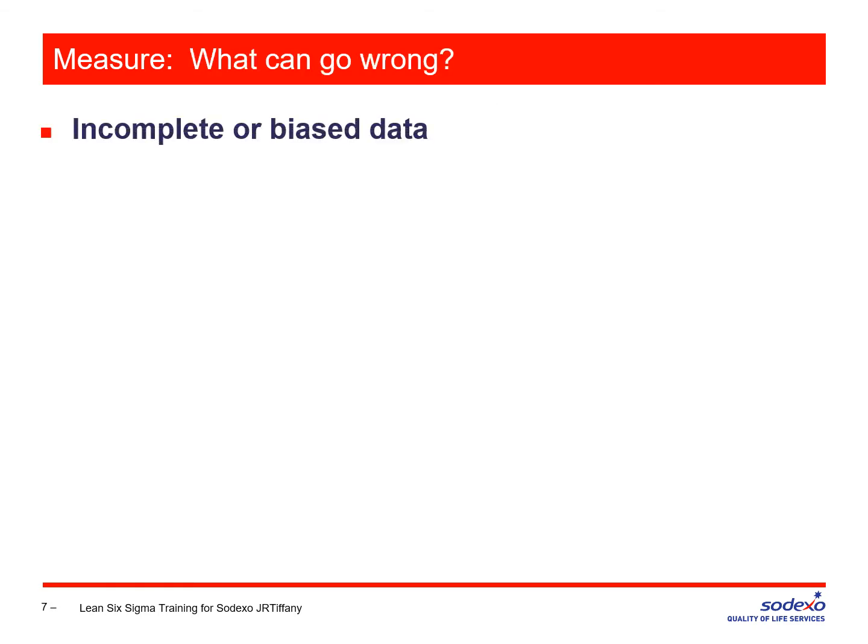Lots of things can go wrong in the measure step. The worst one, of course, is that the data can be biased or spotty — if they are, they're practically useless. Sometimes the process we have isn't really a process at all; it might be just the way people do things because that's the way they've always been done. That's more of a practice than a process. If it's not formalized, if it's done by institutional memory, it certainly isn't a process — it's a practice.